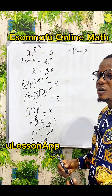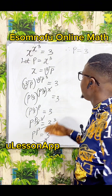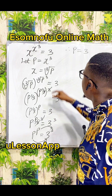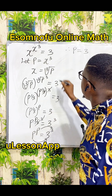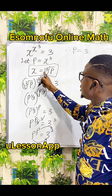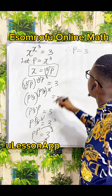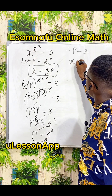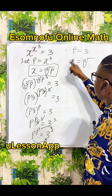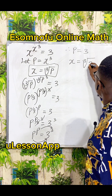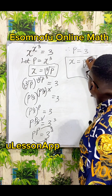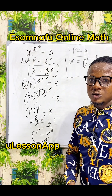So therefore, p is equal to 3. I have got p, but the question is not wanting us to find p. We are required to find the value of x. But from this relation, we have known that x is equal to the cube root of p. So to get my x, I have to do that x will now be the cube root of p, and p is now 3. So x will be the cube root of 3. This can be the value that will satisfy x in this equation.